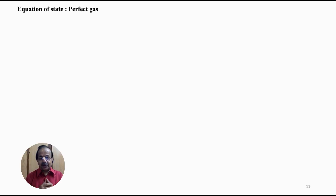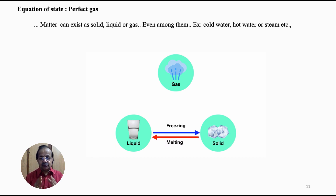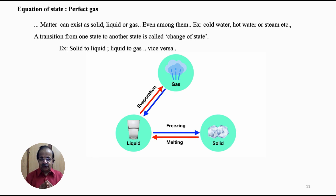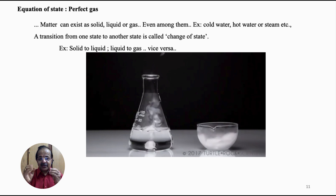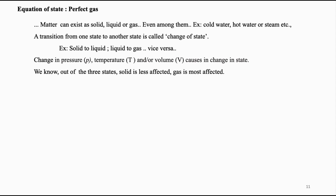Let us switch over to the equation of state leading to the definition of perfect gas. Matter can exist as a solid, liquid, or gas. Depending upon pressure and temperature, they can exist in still different states — for example, water can be cold water, hot water, or vapour; carbon dioxide can be gaseous or dry ice. Transition from one state to another is called change of state — solid to liquid, or liquid to gas, and vice versa. Change in pressure, temperature, or volume results in change of state. Out of all three states, solid is least affected by these changes, whereas gas is easily susceptible to all of them.